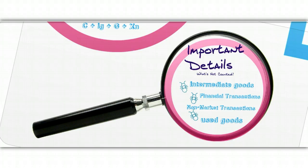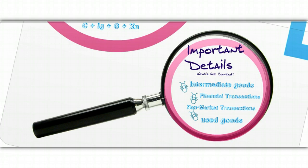Some important details about what GDP does not count. We do not count intermediate goods, as mentioned earlier. We do not count financial transactions — buying stocks in the stock market, because nothing new was created. We don't count non-market transactions, such as babysitting someone and not reporting it on your taxes. We don't count illegal transactions — the drug trade or prostitution trade don't get reported, so they can't get counted. And we don't count used goods, since they were already counted in the year they were created and we don't want to count them twice.